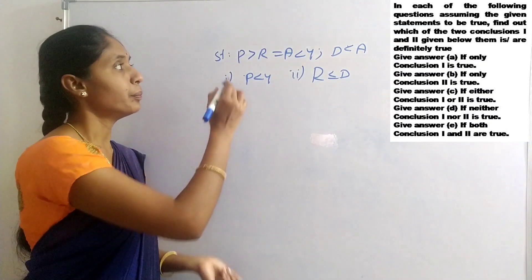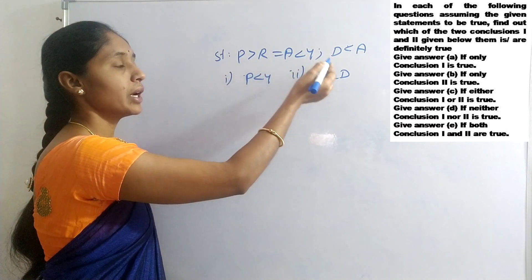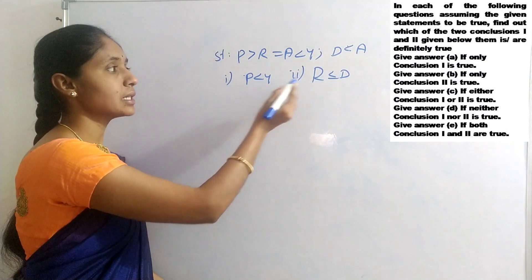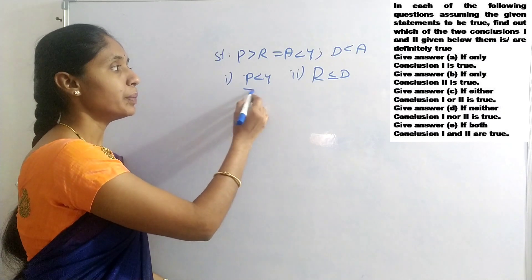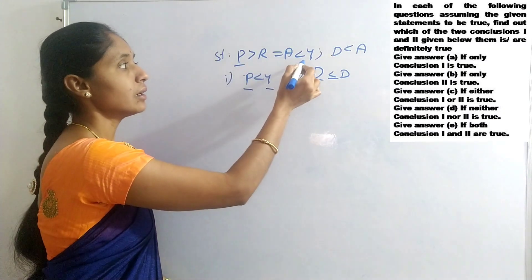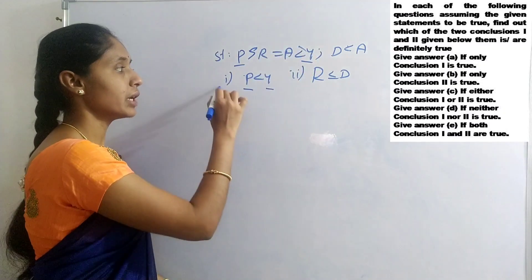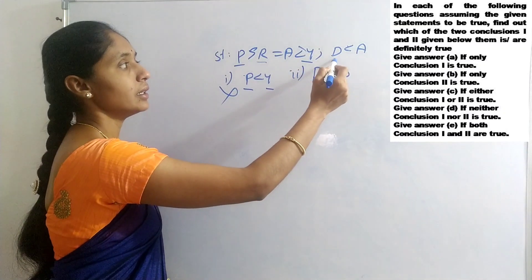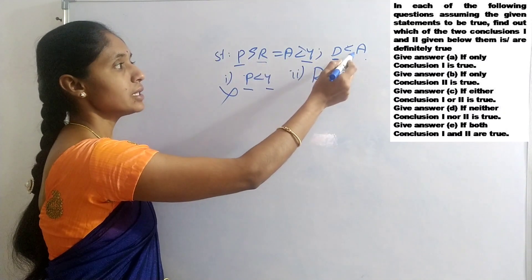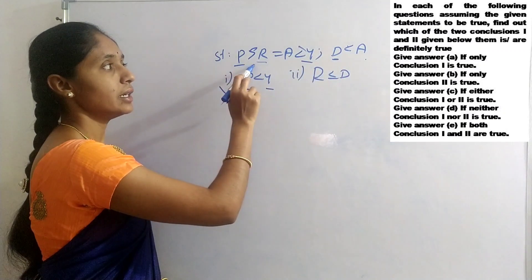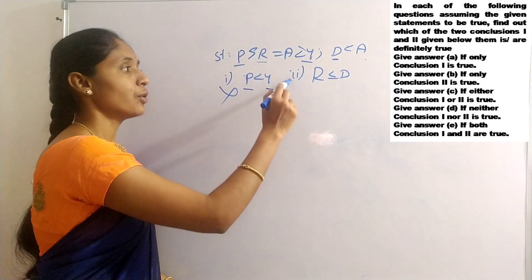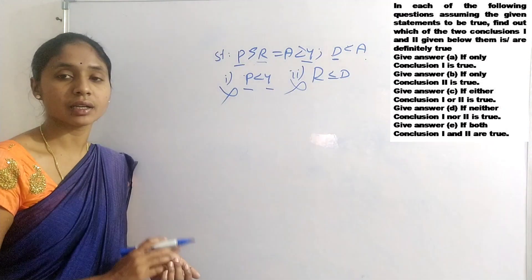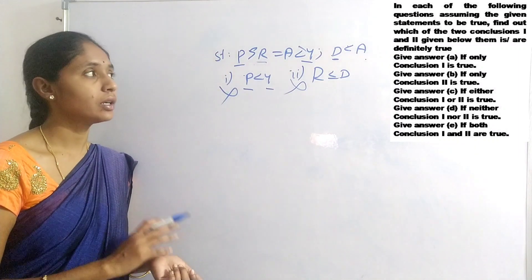Question 8: Statement 1: P greater than R equals to A less than Y. Statement 2: D less than A. Conclusions: P less than Y; R less than or equals to D. For P and Y, signs are greater than and less than — opposite, no relation. For R and D, tracing gives A less than D, but signs between R and D are less than and greater than — opposite, no relation. Neither conclusion 1 nor 2 is true.